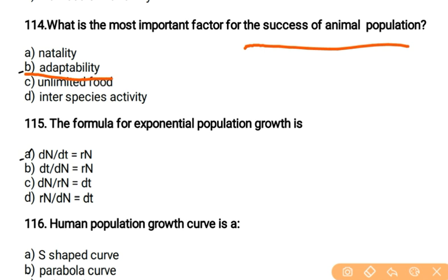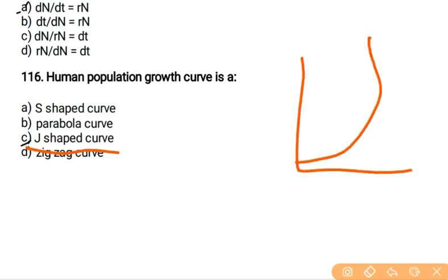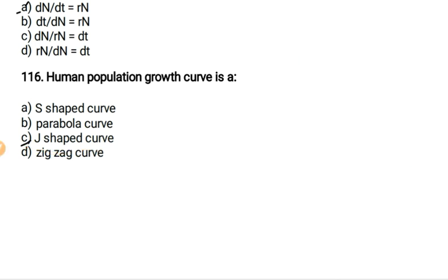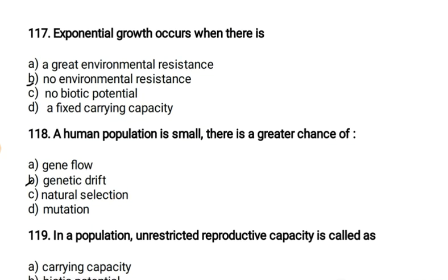The formula for exponential population growth is dN/dt = rN. Human population growth curve is a J-shaped curve. Exponential growth occurs when there is no environmental resistance — when there is no environmental resistance, automatically the growth will be on an exponential basis.